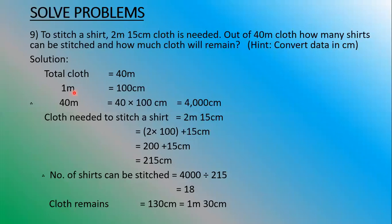You know that 1 meter is equal to 100cm. So for converting 40m, we will multiply 40 by 100. 4 ones are 4, then three zeros will be left. So 40m is equal to 4000cm.